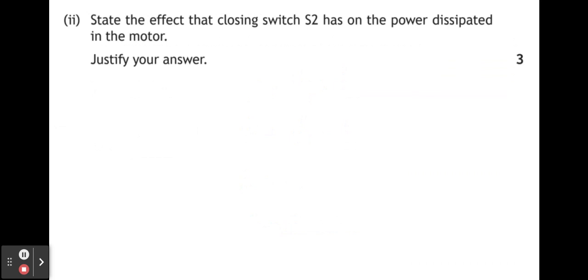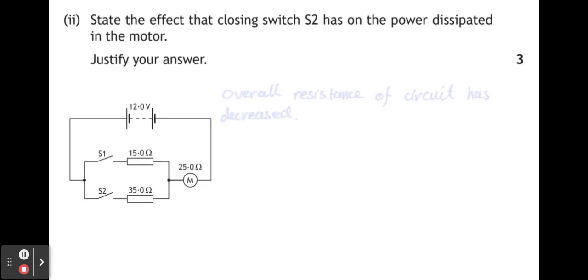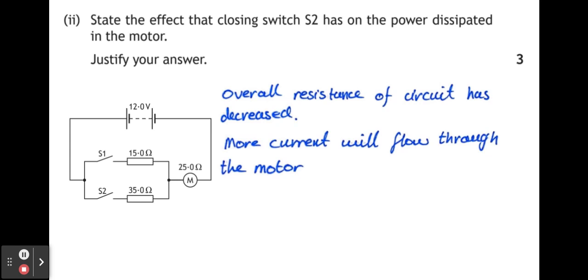Part two, state the effect that closing switch S2 has on the power dissipated in the motor. Hopefully we'll notice that that parallel section had a total resistance smaller than one of the resistors on their own, and the effect that has is it reduces the total resistance of the circuit. The 15 ohm and the 35 ohm in parallel gave a resistance of 10.5 ohms. So the total resistance of the circuit with S2 on has dropped from 40 ohms down to 35.5 ohms. So the overall resistance of the circuit has decreased. The decrease in resistance will have caused more current to flow around the circuit and more current to flow through the motor. This increase in electric current will have made the motor spin faster and dissipate more power.